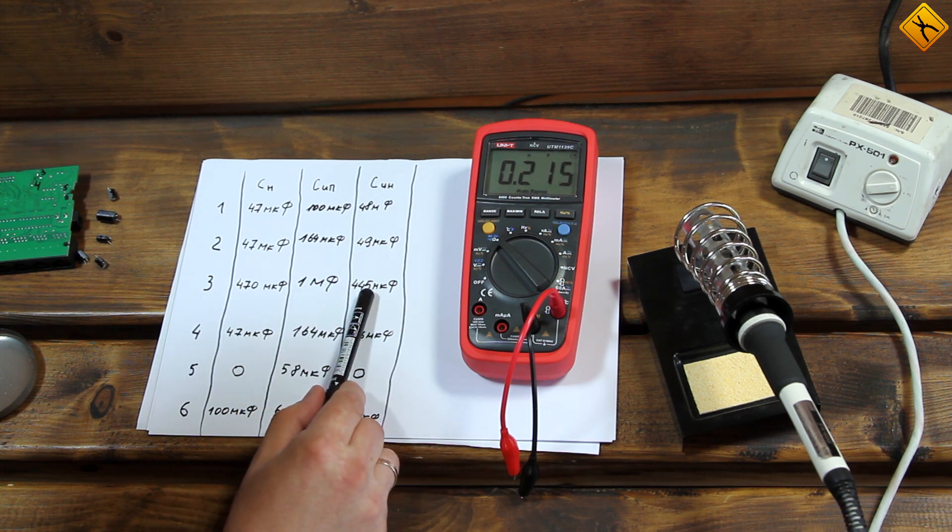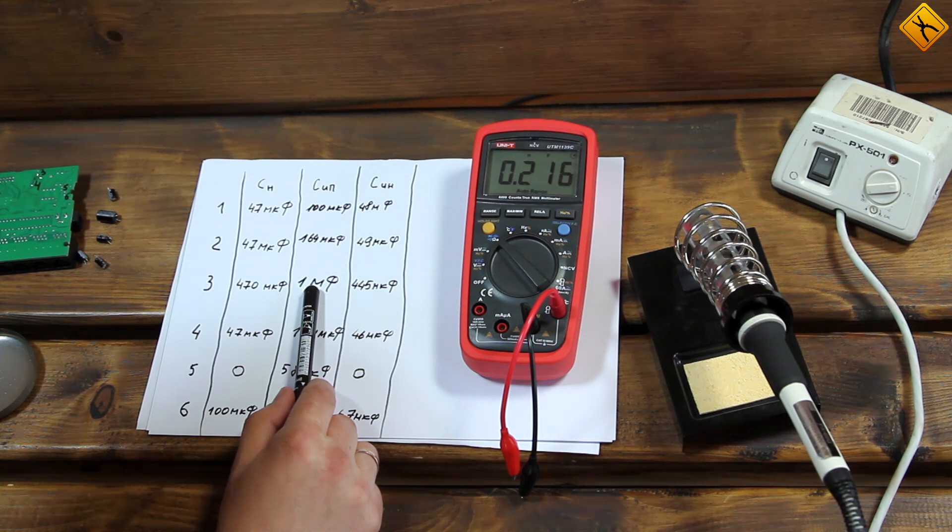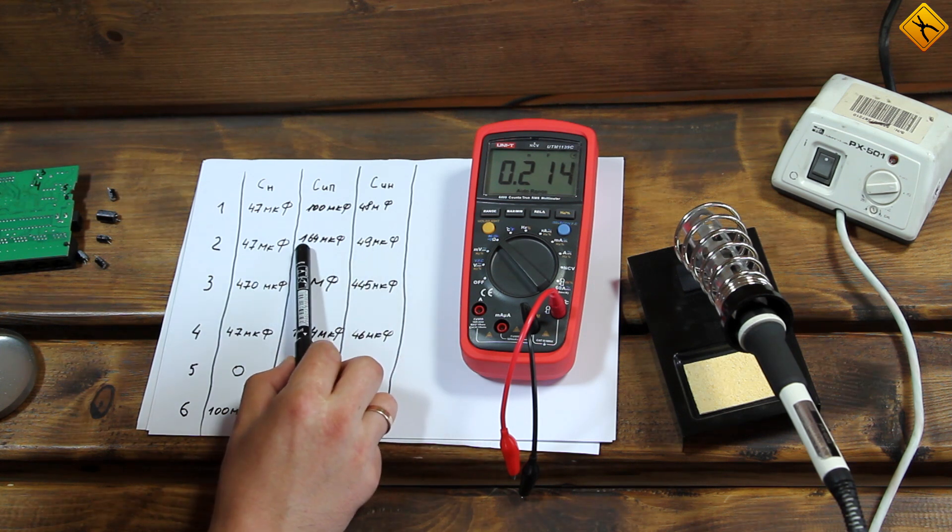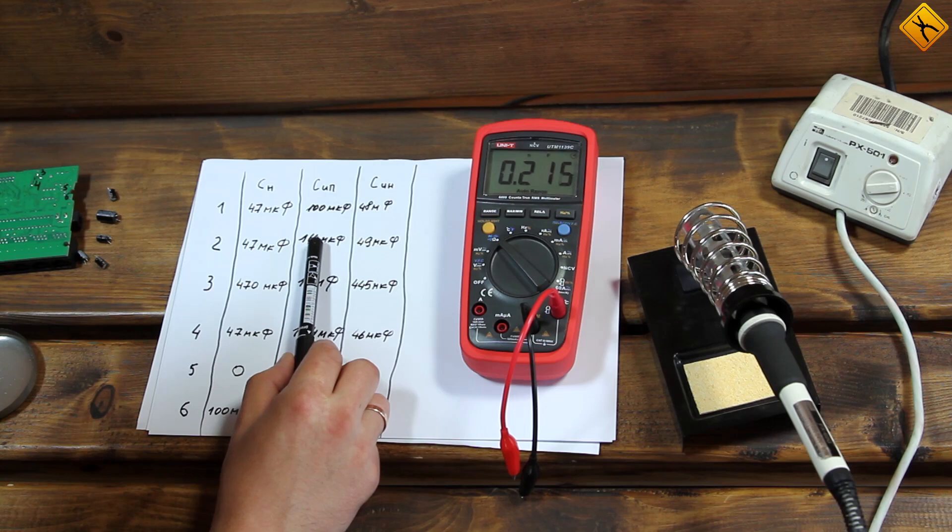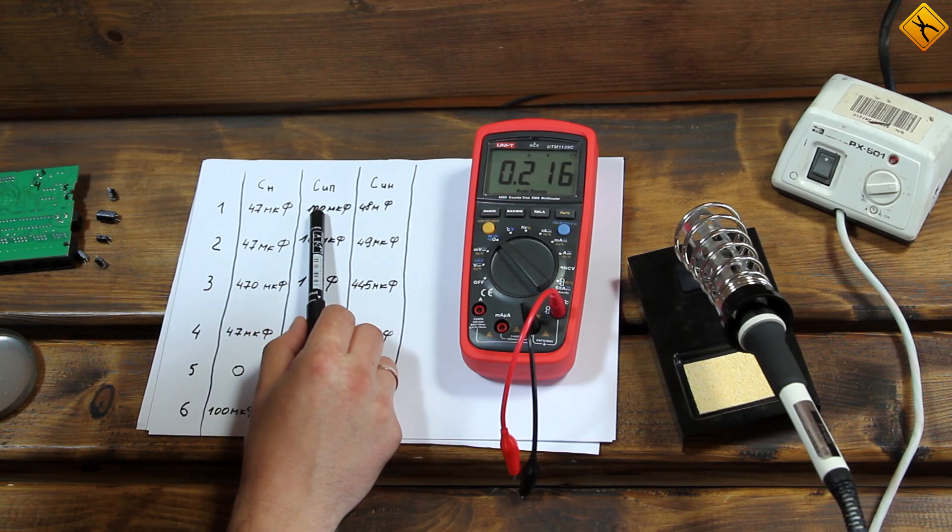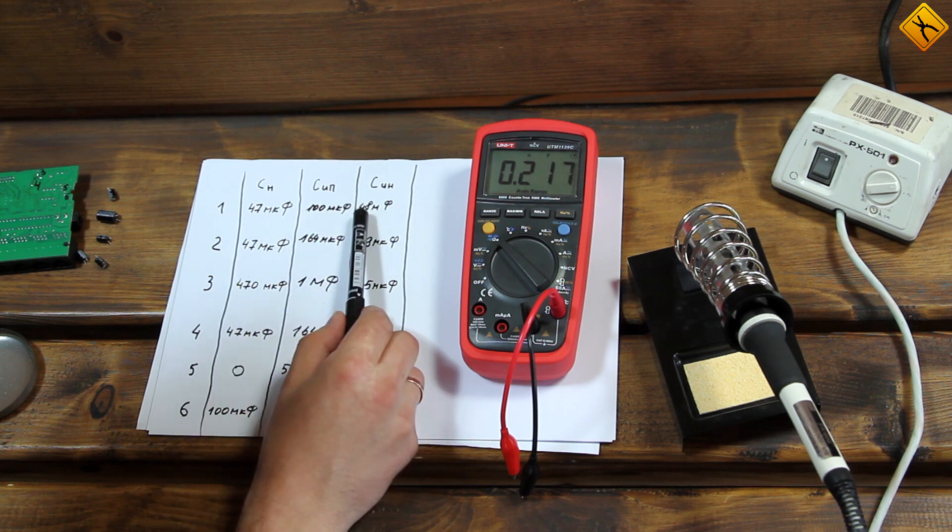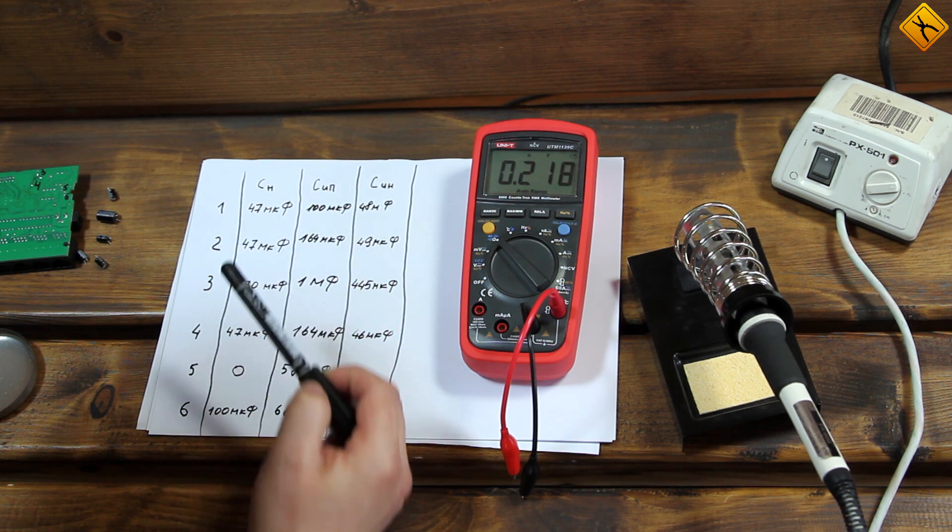Here, the measured capacitance was almost twice as high as the actual one. The same here with 164 microfarads, when it should have been 49. Here, we measured 100 microfarads on the PCB, but its actual capacitance is a mere 48 microfarads.